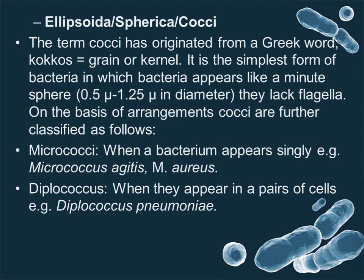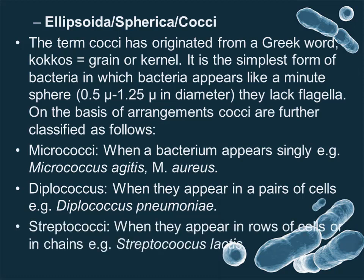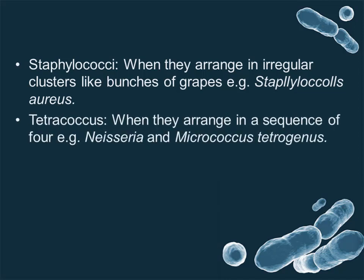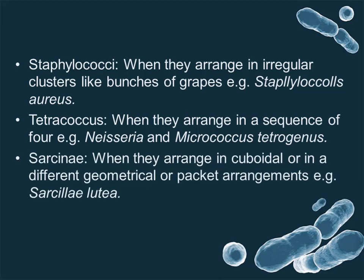Diplococcus — when they appear in pairs of cells, for example, Diplococcus pneumoniae. Staphylococci — when they are arranged in irregular clusters like bunches of grapes, for example, Staphylococcus aureus. Tetracocci — when they are arranged in a group of four, for example, Neisseria and Micrococcus tetragenus. Sarcina — when they are arranged in cuboidal or packet arrangements, for example, Sarcina species.